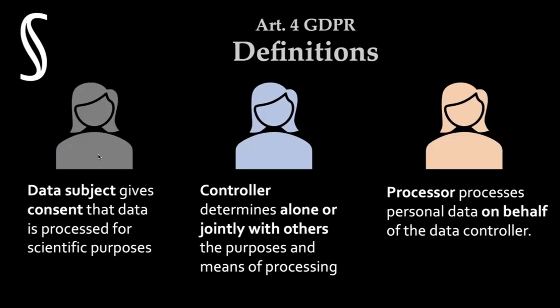In GDPR there are only three kinds of people — three roles. We have data subjects: persons from which personal data can be collected. Then we have a controller, who has the means to decide the purpose and means of processing. For example, if someone sends you an email with health data of a certain person, you automatically become a controller of that health data — you don't need to sign a contract; you could become a controller without your will.